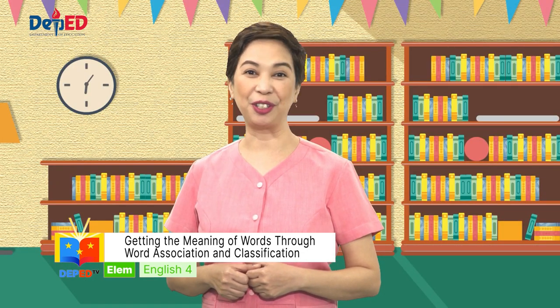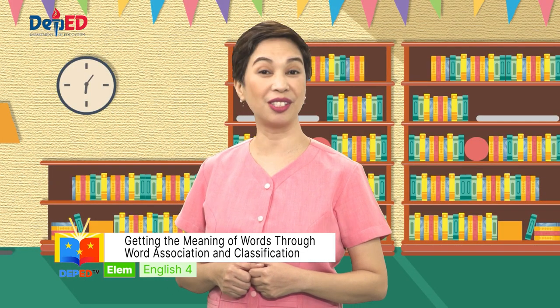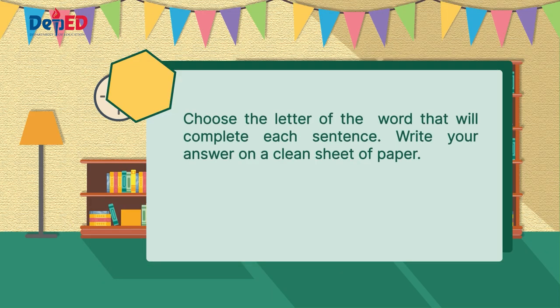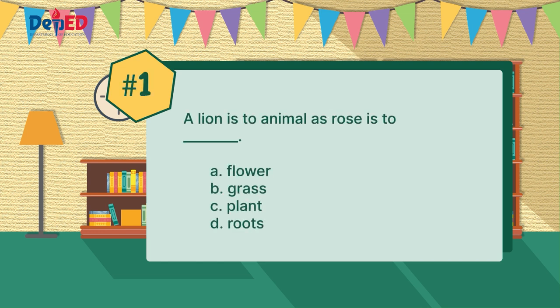Here are other examples. Gift is to Christmas Day as red rose is to Valentine's Day. Gifts are everywhere on Christmas Day, just the same with roses on Valentine's Day. For analogy, you have to choose the letter of the word that will complete each sentence. Write your answer on a clean sheet of paper. Number one: a lion is to animal as rose is to blank. Letter A: flower. Letter B: grass. Letter C: plant. Letter D: roots. If your answer is letter A, flower, then you are correct.